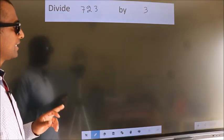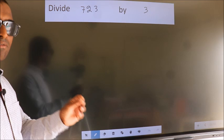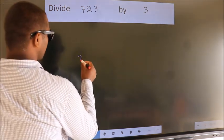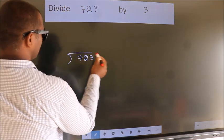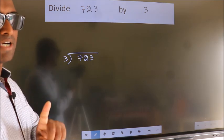Divide 7.23 by 3. To do this division, we should frame it in this way. 7.23 here, 3 here. This is your step 1.